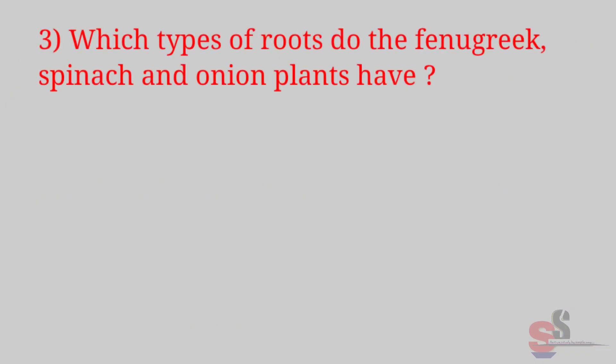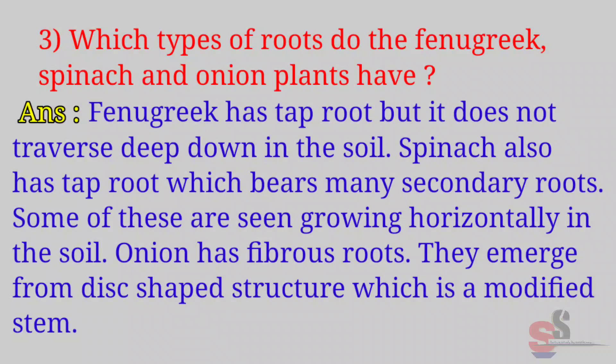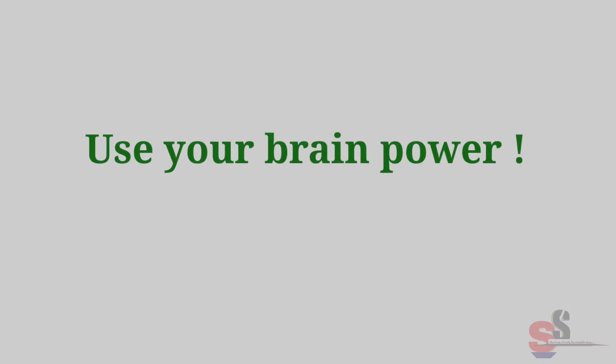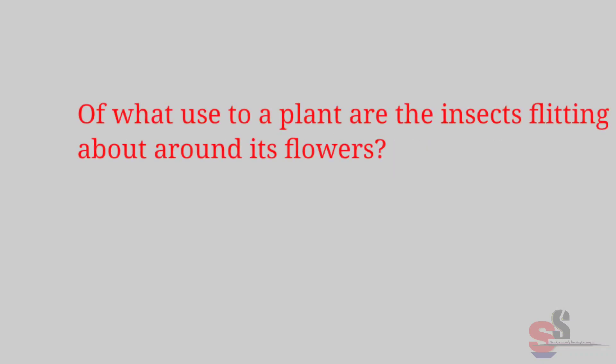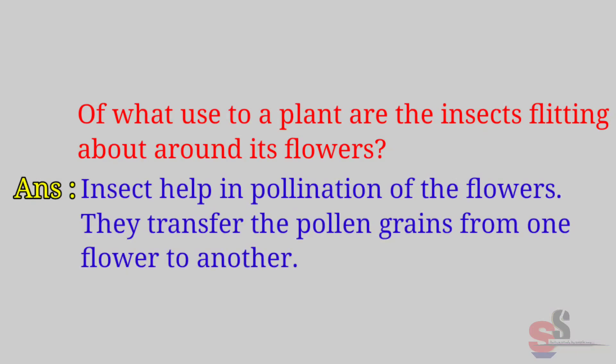Which types of roots do fenugreek, spinach, and onion plants have? Answer: Fenugreek has a tap root but it does not traverse deep down in the soil. Spinach also has a tap root which bears many secondary roots, some of which are seen growing horizontally in the soil. Onion has fibrous roots; they emerge from a disc-shaped structure which is a modified stem. Use your brain power — Textbook page no. 14: Of what use to a plant are the insects flitting about around its flowers? Answer: Insects help in pollination of the flowers; they transfer the pollen grains from one flower to another.